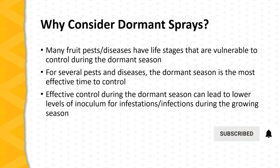We have several insect and disease pests where the dormant season is by far the most effective time to control. A good example would be peach leaf curl on peach. Always keep in mind from the standpoint of integrated pest management that effective control during the dormant season can set the stage for lower levels of inoculum later on during the growing season — in other words, fewer instances of infestations or infections during the growing season if we do a good job of managing these problems during the dormant season.